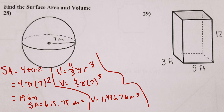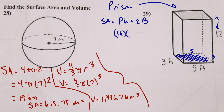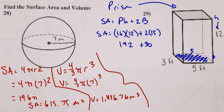Number 29 is a rectangular prism. Surface area = (perimeter of base × height) + 2 × (area of base). Calling the base the rectangle with sides 3 and 5: perimeter of base = 3 + 3 + 5 + 5 = 16. Height = 12. Area of base = 3 × 5 = 15. So surface area = (16 × 12) + 2(15) = 192 + 30 = 222 square feet.